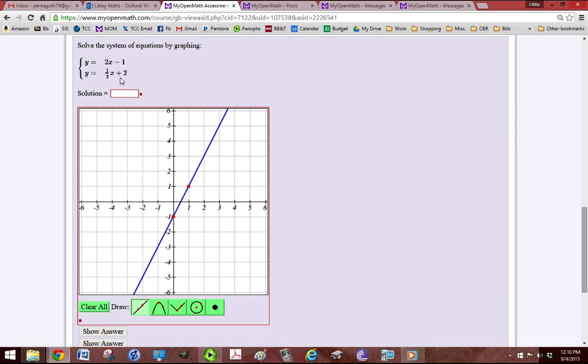My second line, I'm going to start at y equals 2. So one click at y equals 2, and I have a slope of 1 half, so that's up 1 over to the right by 2.